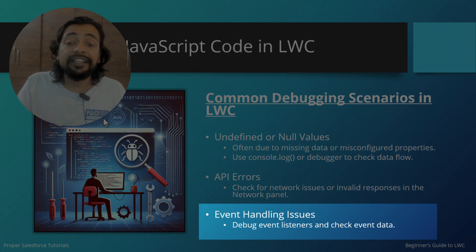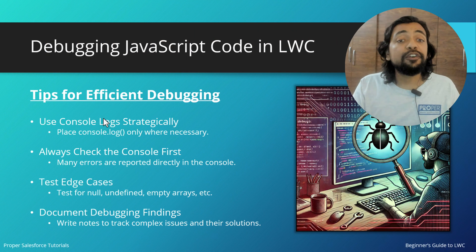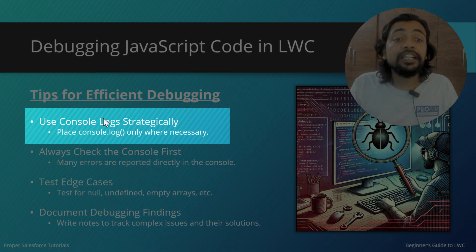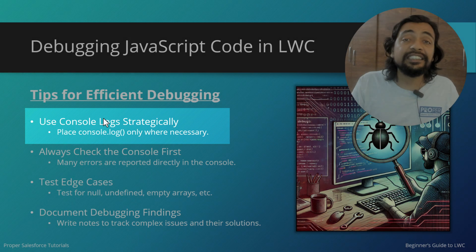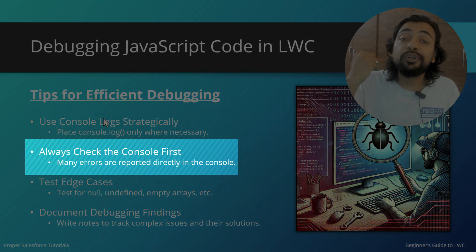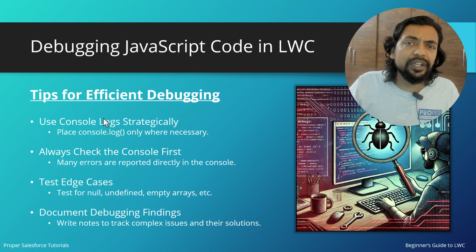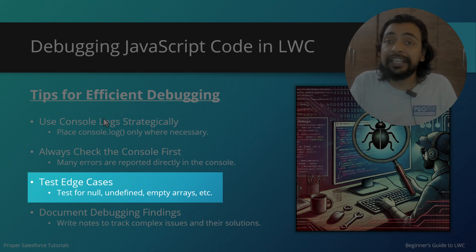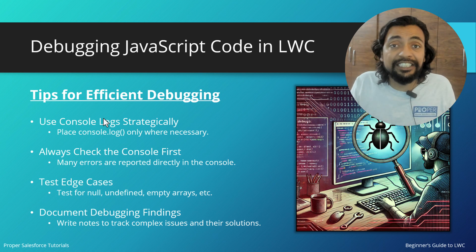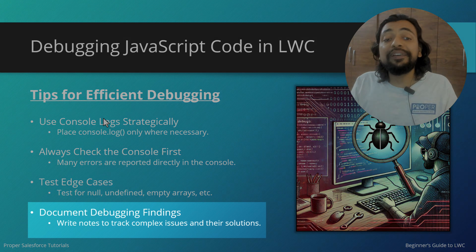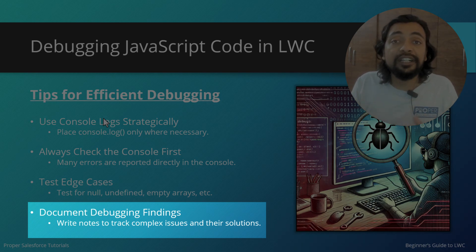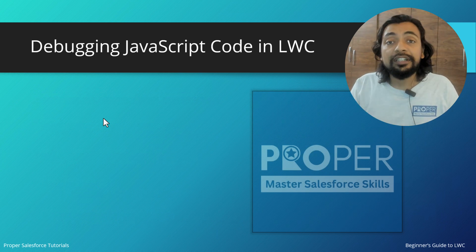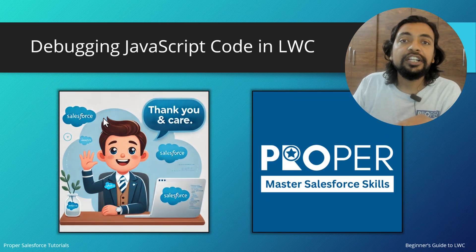For event handling issues, debug event listeners and check event data. Some tips for efficient debugging: place console logs only where necessary. Always check the console first — sometimes it already tells you about common errors and exceptions, so resolve those before adding logs. Test edge cases like null, undefined, and empty arrays first. Always document your findings to keep track of complex issues and their solutions. That marks the end of this session — see you in the next one.